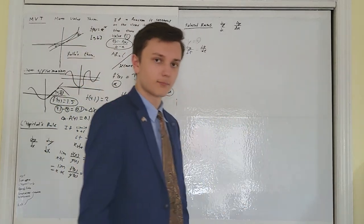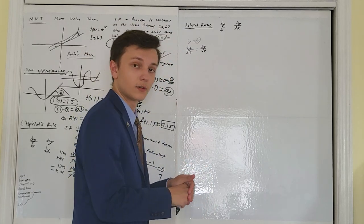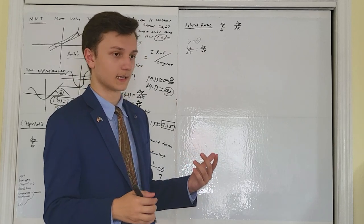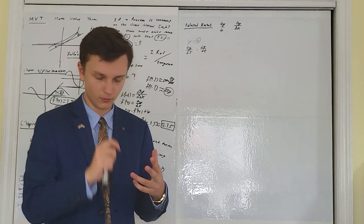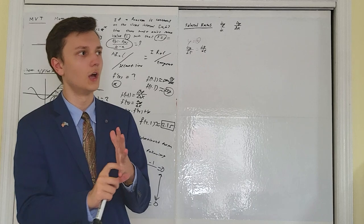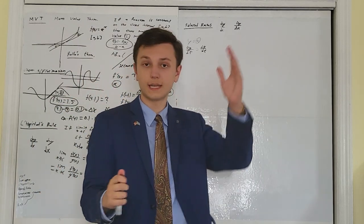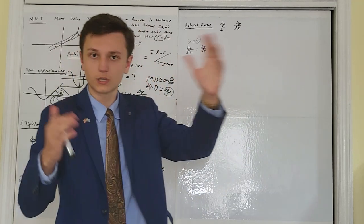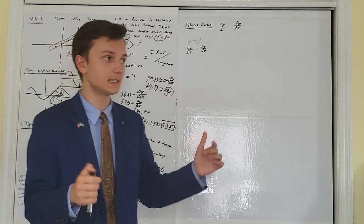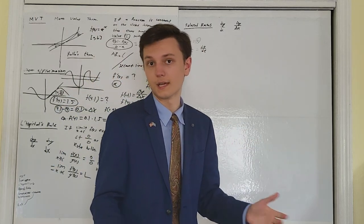A lot of related rates problems in Calculus are related to geometry, so you need to memorize all the different geometric formulas — surface area of a cube, area of a rectangular prism, area of a circle, area and surface area of a sphere, circumference of a circle, area and surface area of a cone, area of a cylinder, the Pythagorean theorem, and SOH-CAH-TOA. Every common geometric formula will be used in related rates.